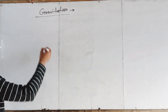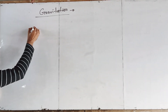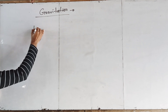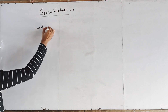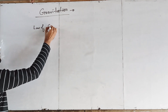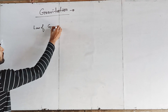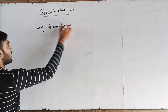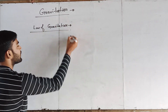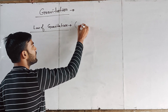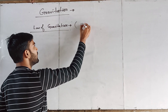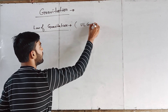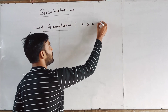In this chapter, first we define the law of gravitation. In short, we call it ULDOG — Universal Law of Gravitation.